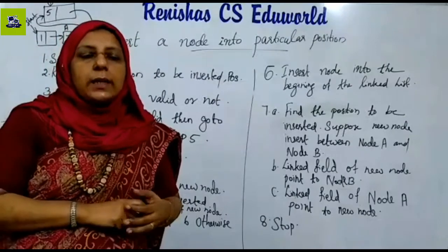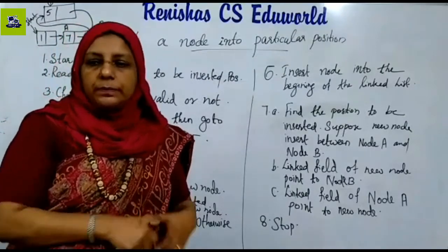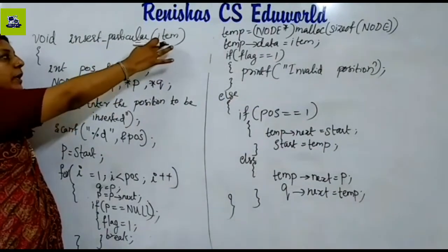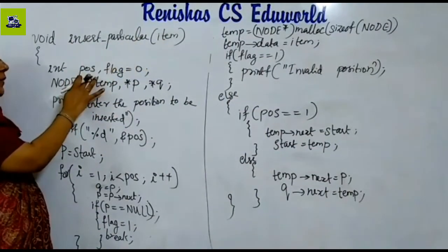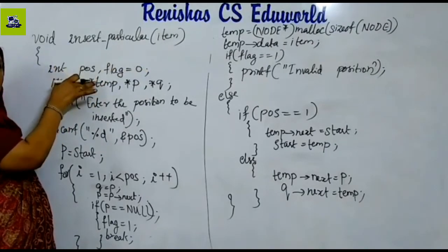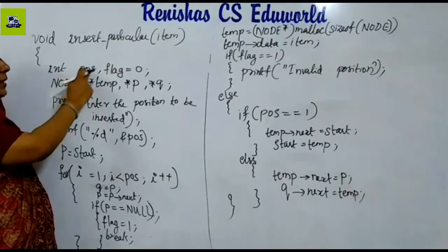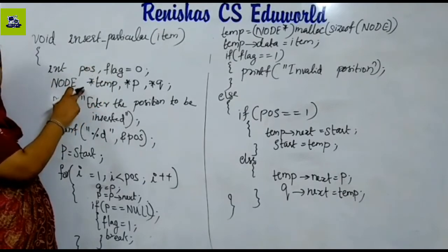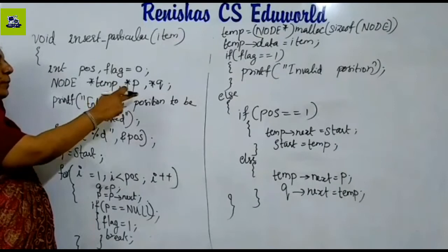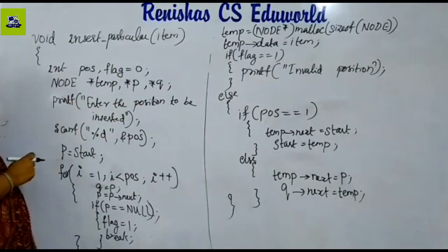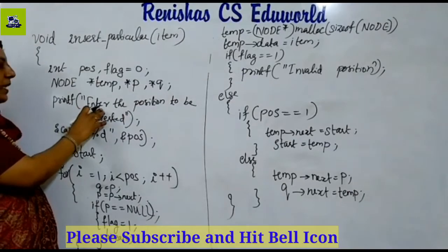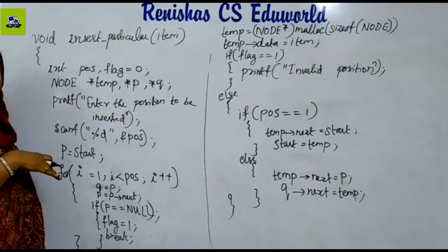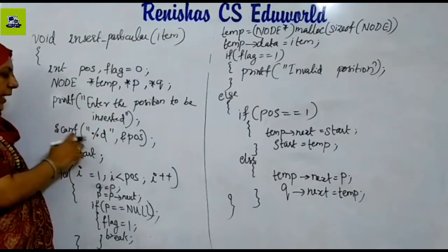In the code implementation, we insert at a particular position using a function. We declare variables: the position is an integer stored in 'post'. We use a flag variable — flag is set to 1 if the position is invalid. There are three pointers: start, P, Q, and the new node. We select the particular position; P is the starting point.